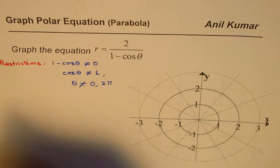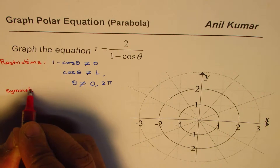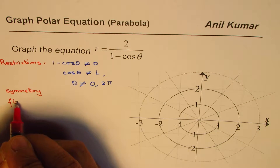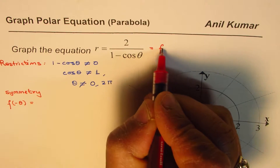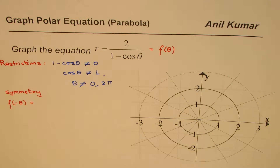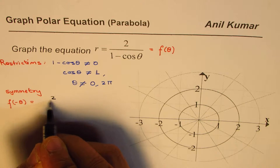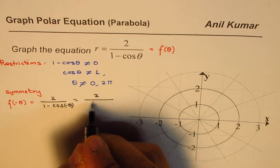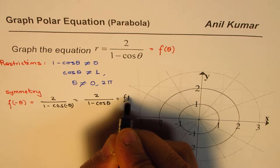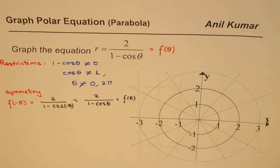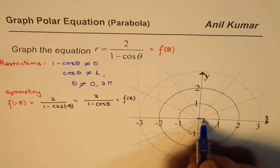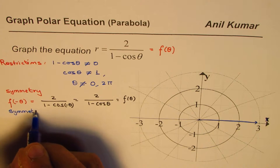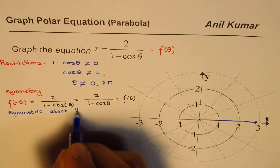The second thing to look into is symmetry. Since cos is an even function, let's find what f of minus theta equals. For f of minus theta, we replace theta with minus theta and get 2 over 1 minus cos of minus theta. Since cos of minus theta equals cos theta, we get 1 minus cos theta in the denominator, which is the same as f of theta. So the equation is symmetric about the polar axis.